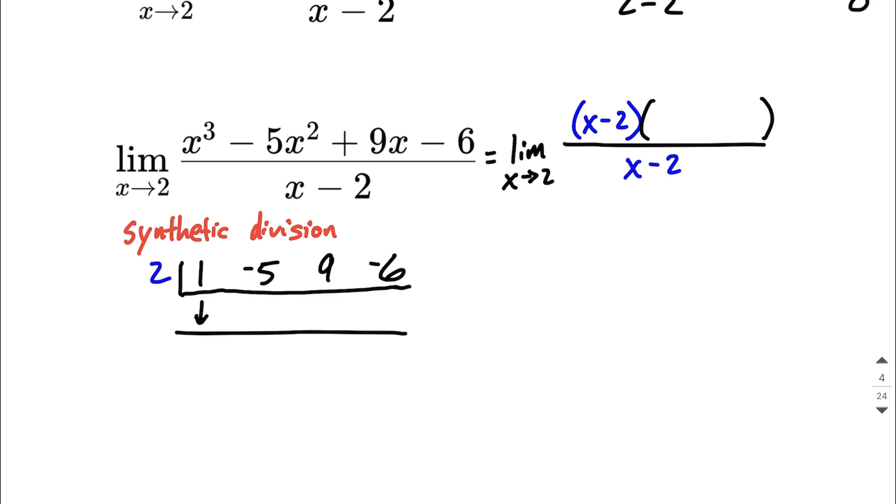Next, the process goes that this first digit comes down, so the 1 comes down. And now we're always going to multiply by that 2 out in front. So 2 times 1 is going to make 2, goes in this next spot. From here, the process says we add. You're just going to add vertically. So negative 5 plus 2 makes negative 3.